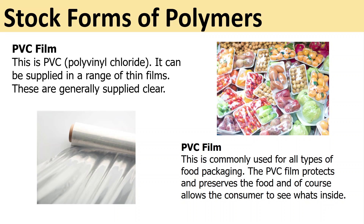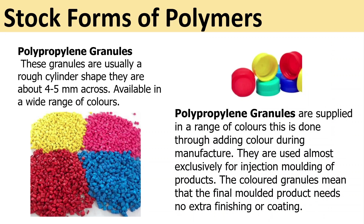Polypropylene granules are usually supplied in a rough cylinder shape about 4–5 millimeters across, available in a wide range of colors by adding dye during manufacture. They are used almost exclusively for injection molding. The colored granules mean the final molded product needs no extra finishing or coating — for example, plastic bottle tops which are injection molded from polypropylene.